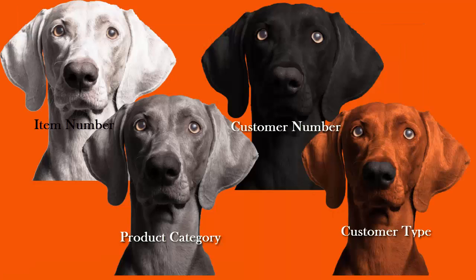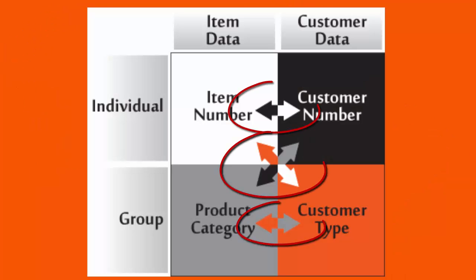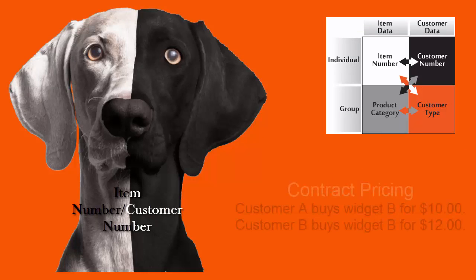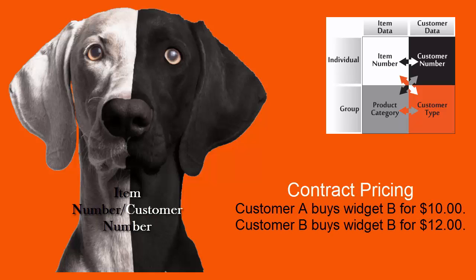Those are four ways to set up pricing, but now we can make combinations of those four types. You can have a combination of Item Number and Customer Number, also known as contract pricing. You agree to let customer A buy widget B for $10, while you sell customer B the same widget for $12.